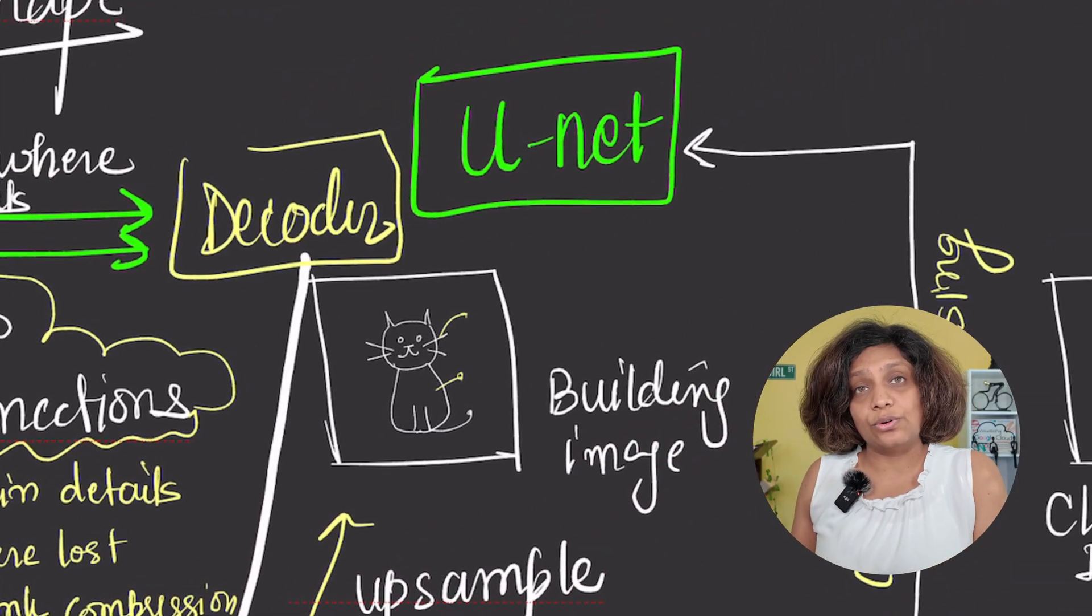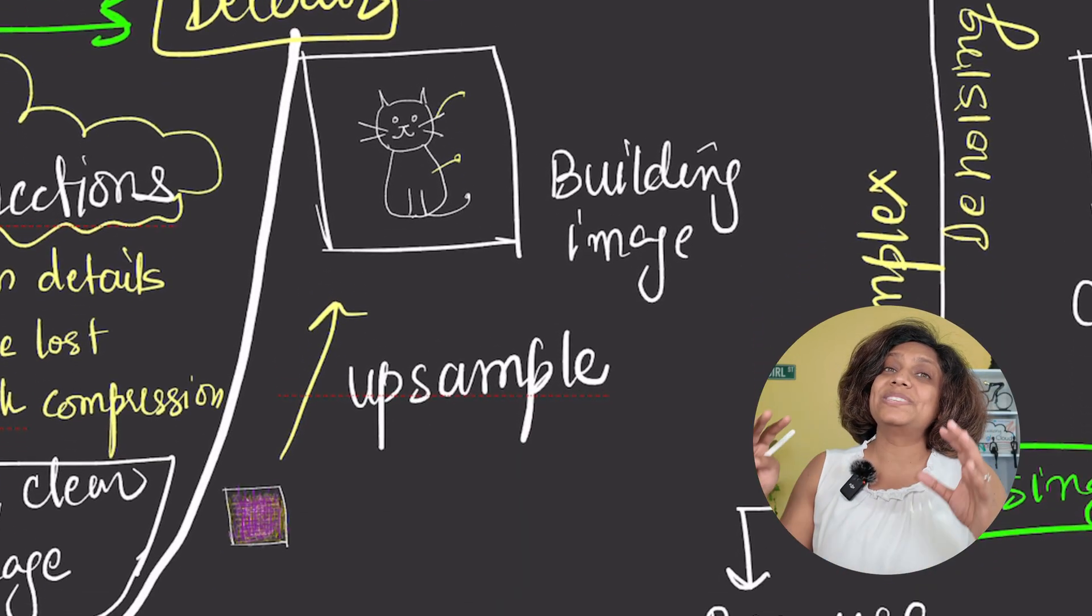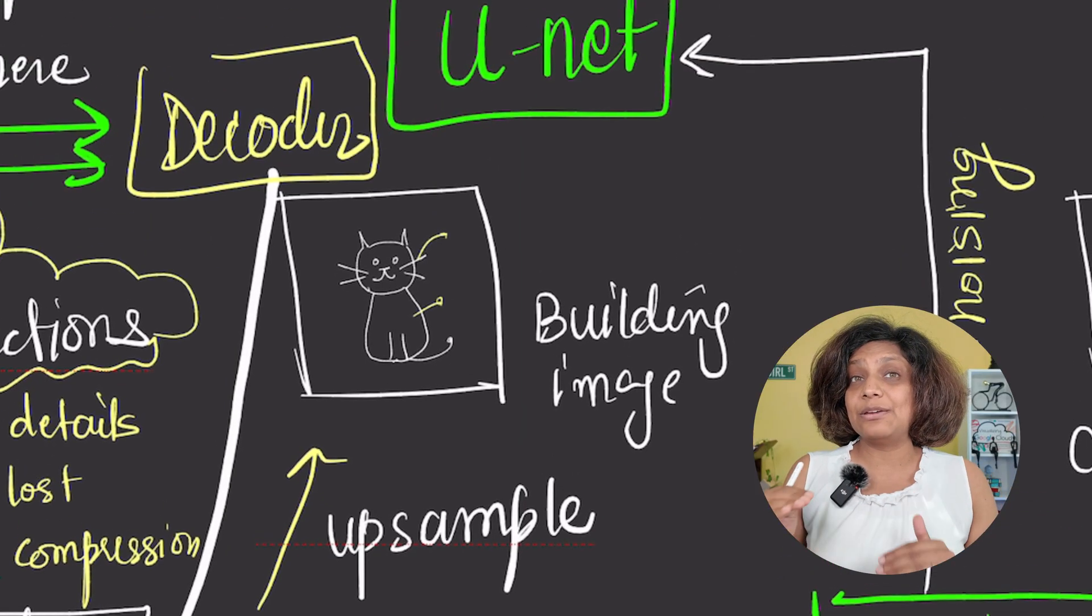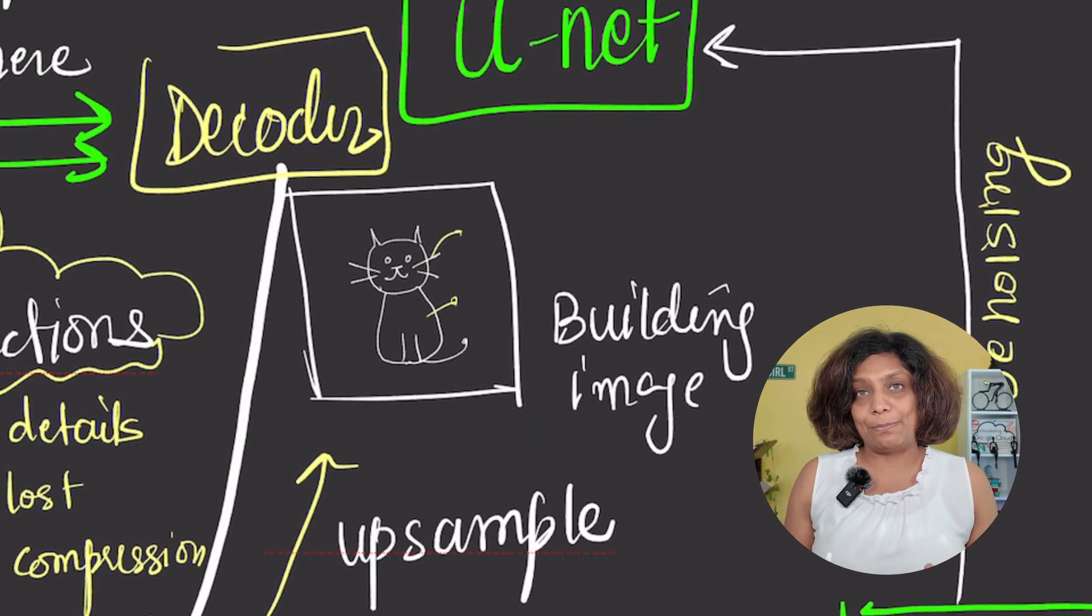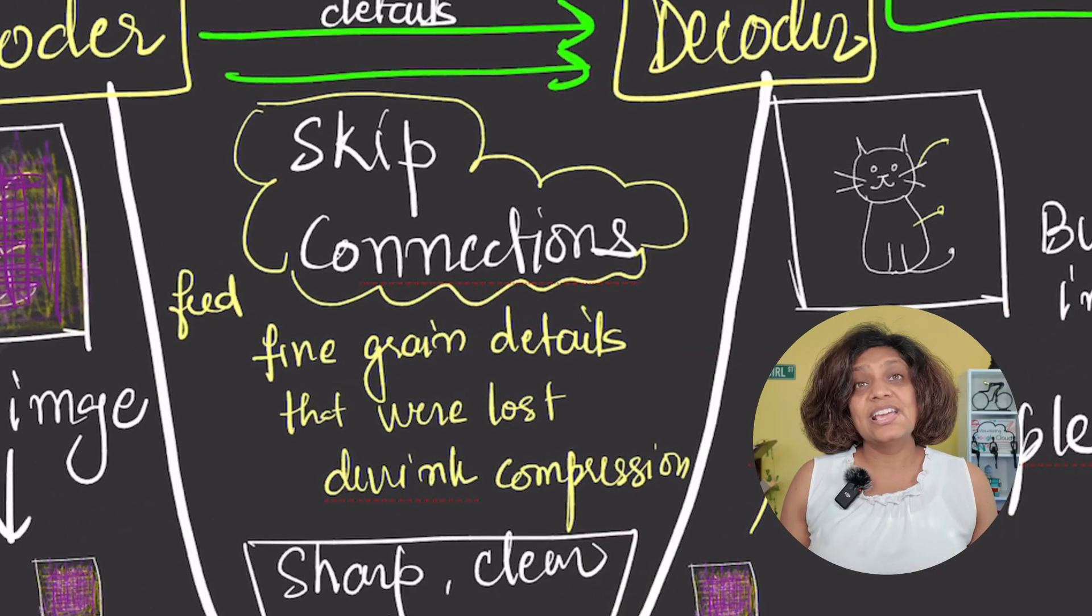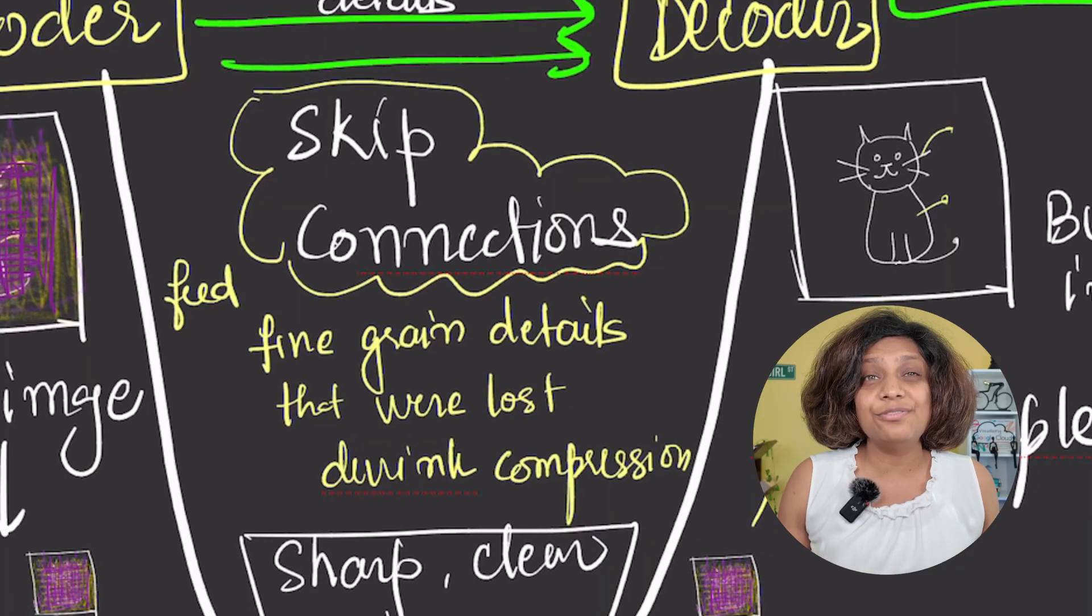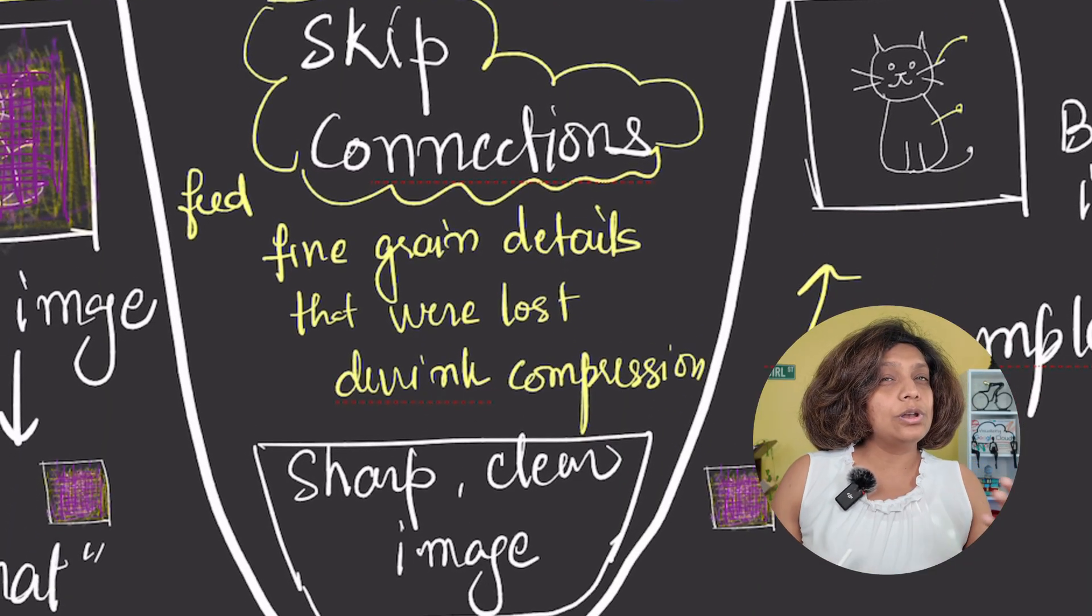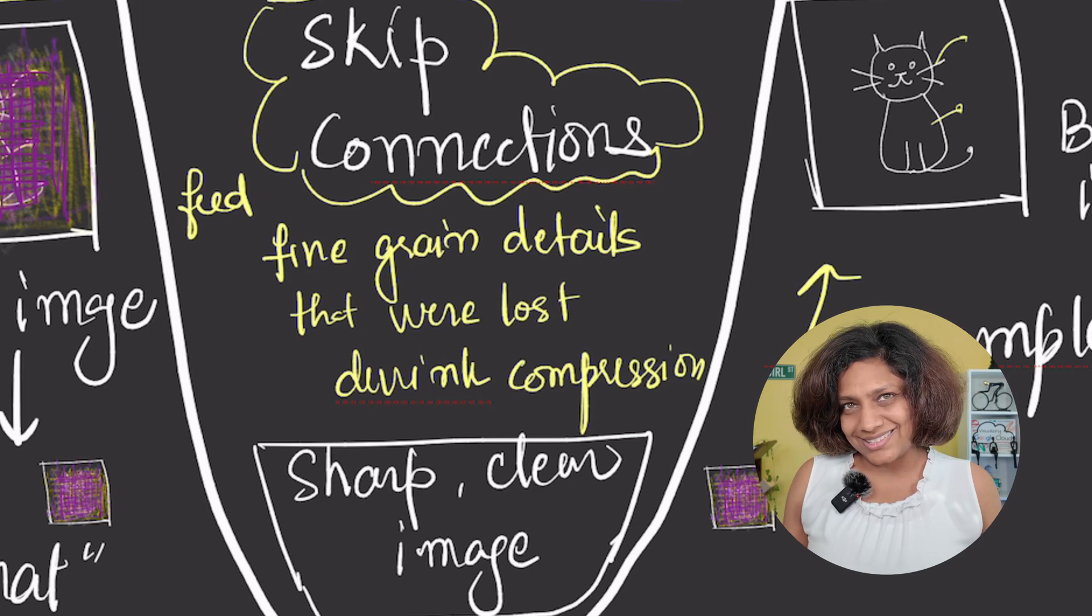On the right-hand side, the decoder takes this compressed information and starts to upsample it, rebuilding the image back to its original size. But here's the U-net's secret weapon: skip connections. These are the direct links from the encoder to the decoder. They feed the fine-grained details that were lost during compression directly to the reconstruction process.